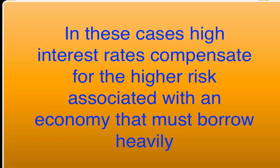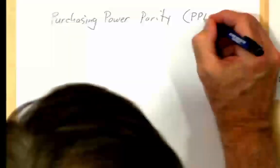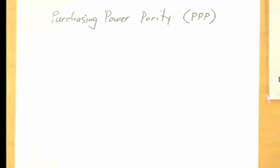Today we're going to move on and talk about the second theory of exchange rate determination, called purchasing power parity, or PPP for short. Purchasing power parity focuses attention on traders, exporters, and importers who go to the foreign exchange market on a regular basis and exchange currencies in order to import and export goods and services. Traders are primarily focused on the price of goods in different locations, seeking to purchase products where prices are lower and move them where prices are higher.